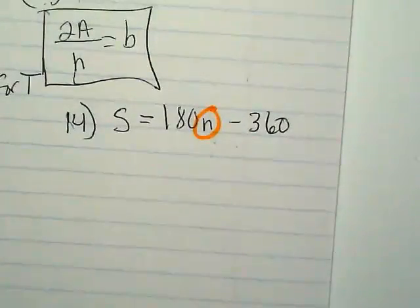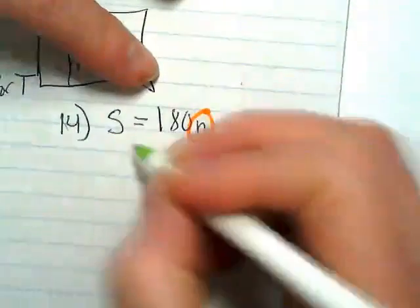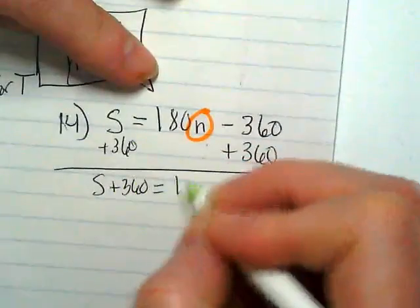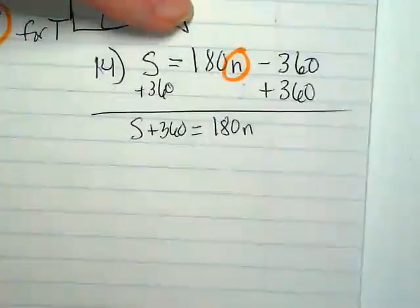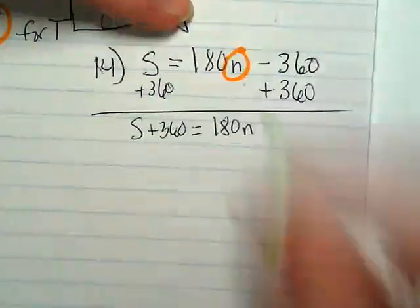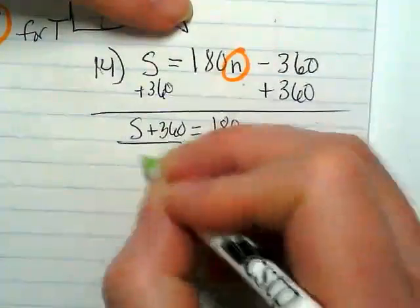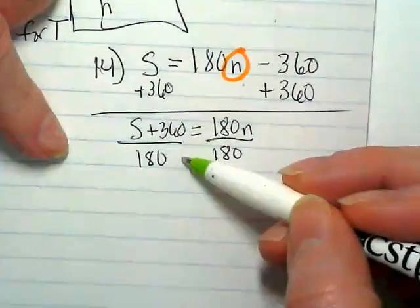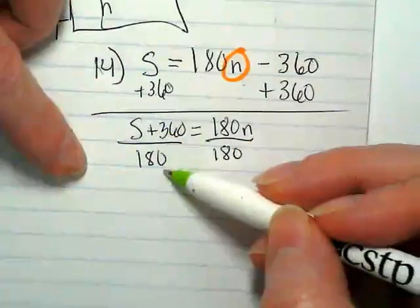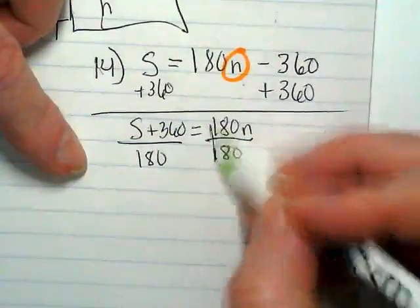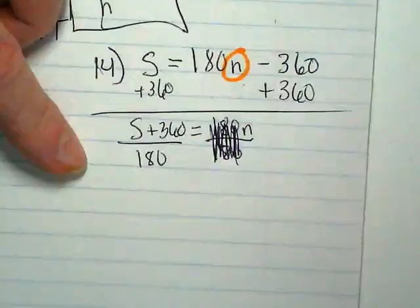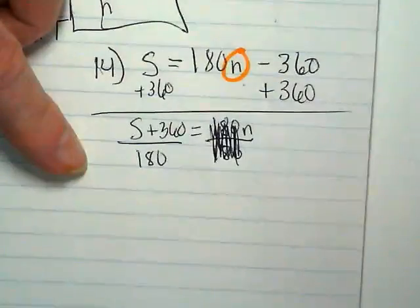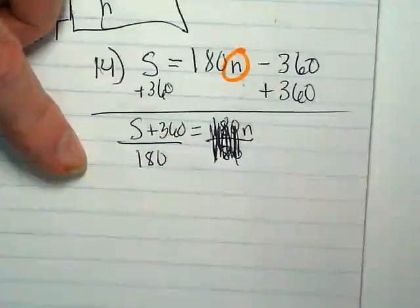I'm going to add that 360 first, right? And I get S plus 360 equals 180N. What am I going to divide by? 180. Yep. And when I do that, I really, really wish I could divide that 360 by 180 because I know it would be 2, but I can't because the S can't be divided by the 180 and have any change. So, honestly, that's the answer right there. It feels like we should do more, but we don't need to. You just need to get the N by itself.